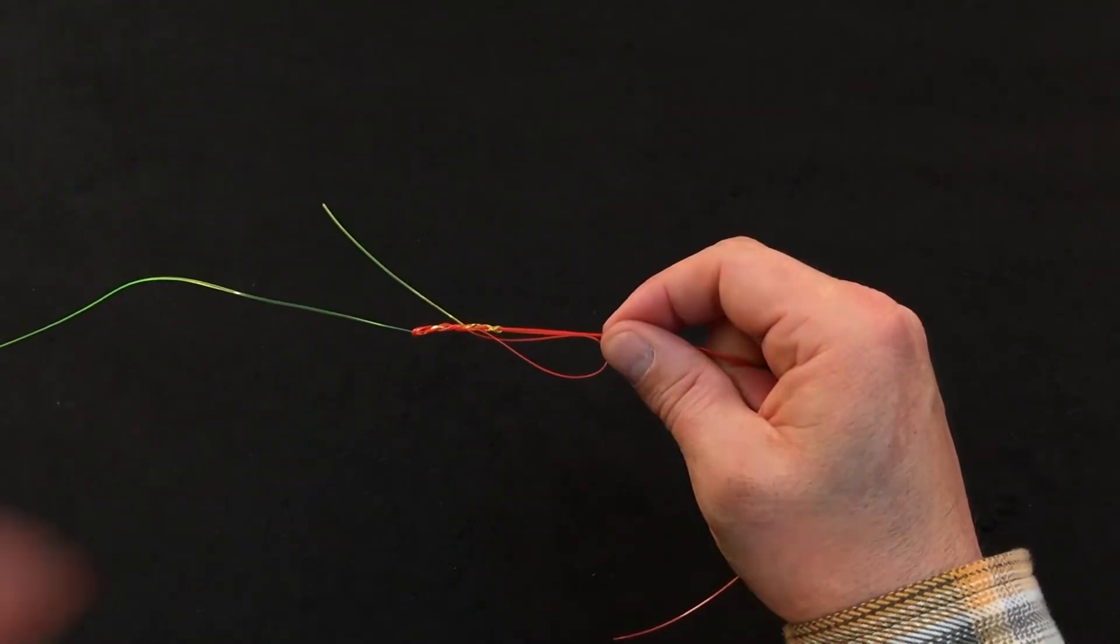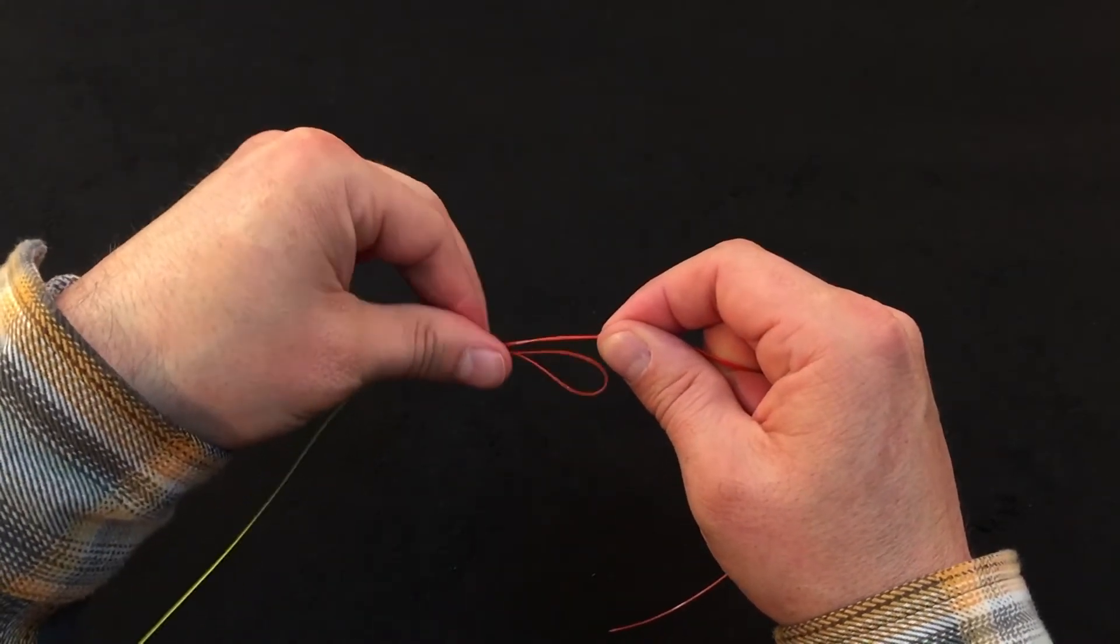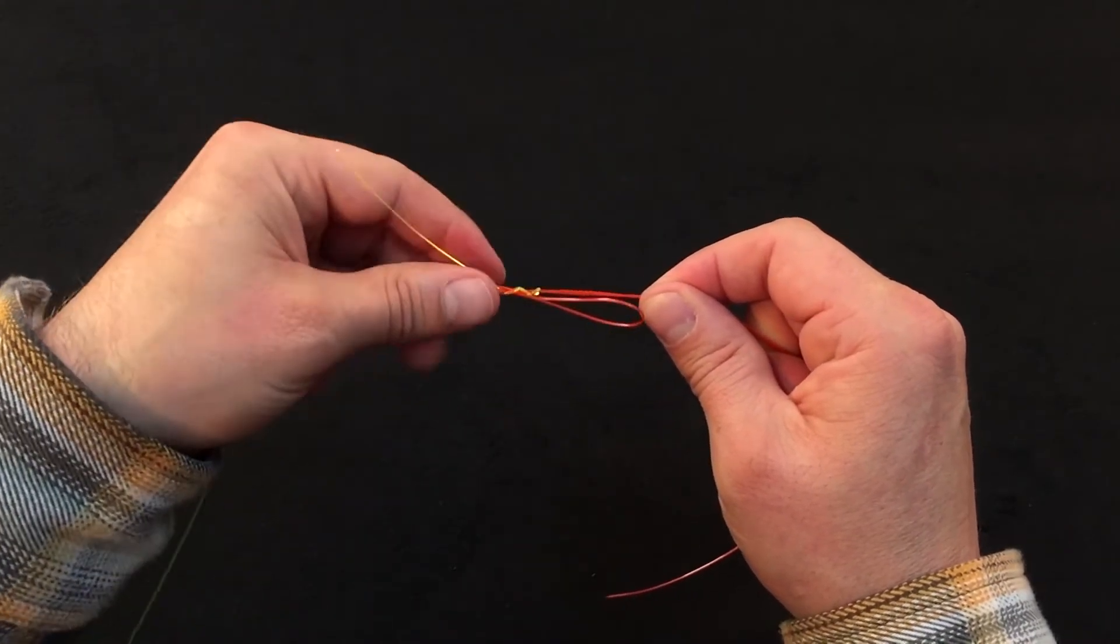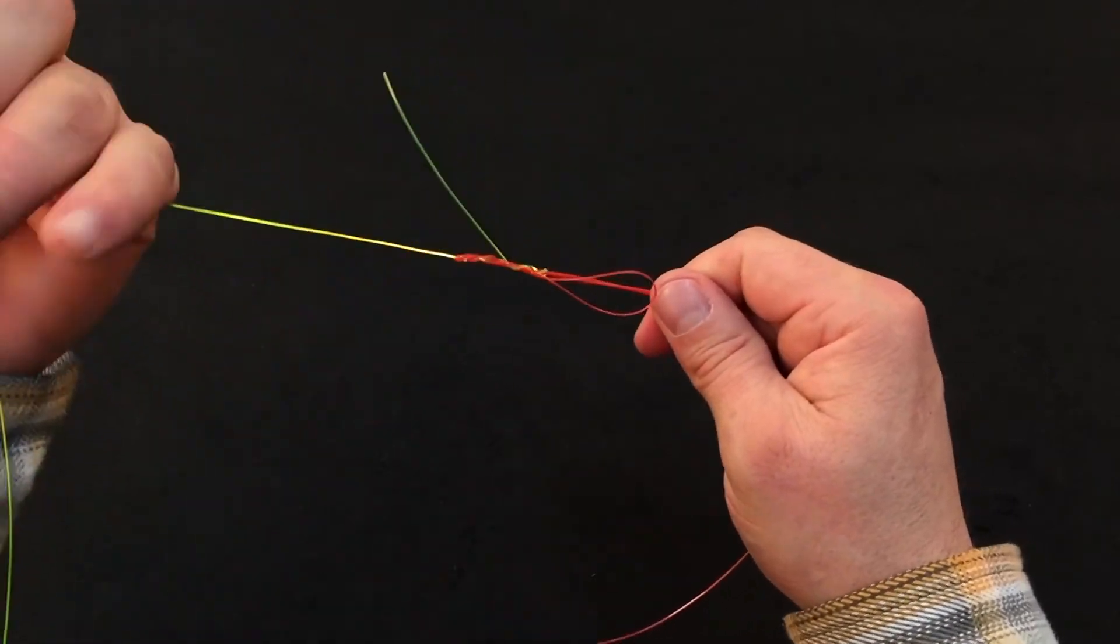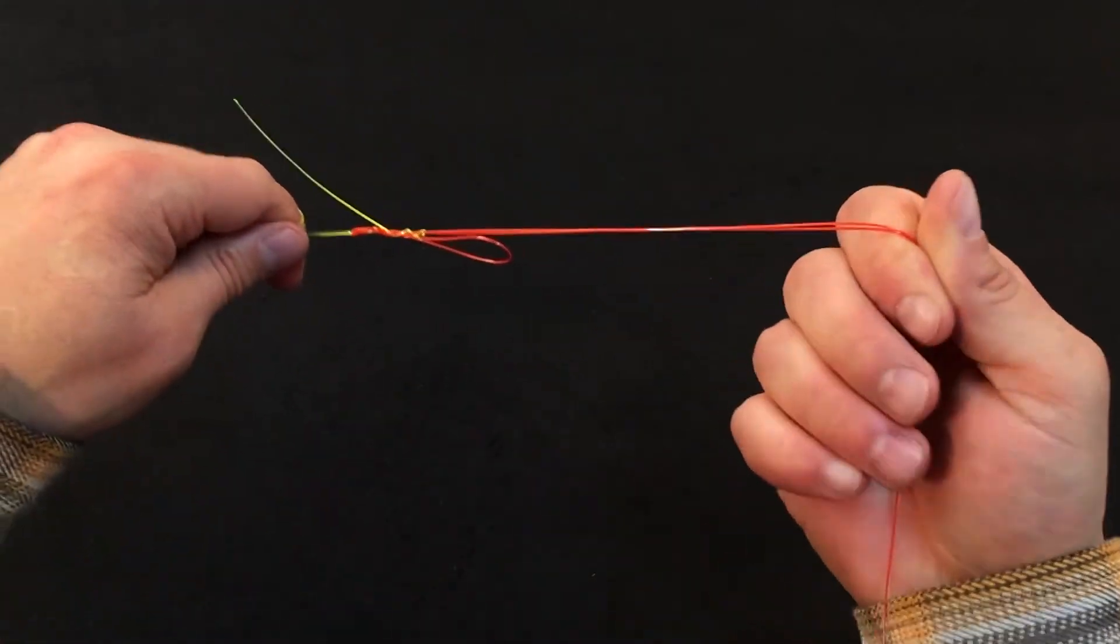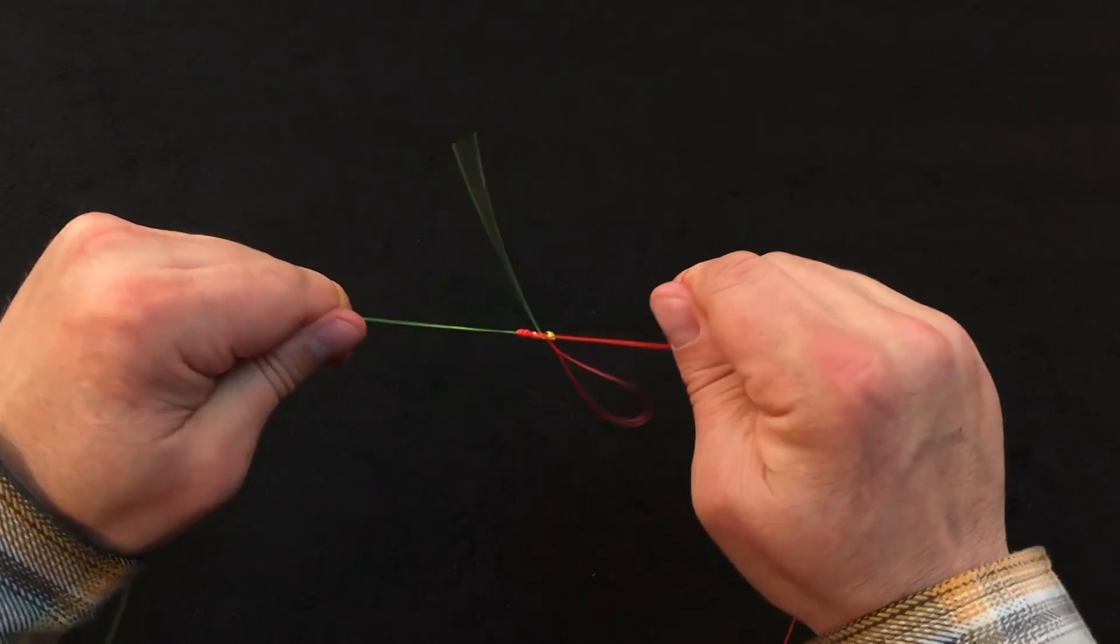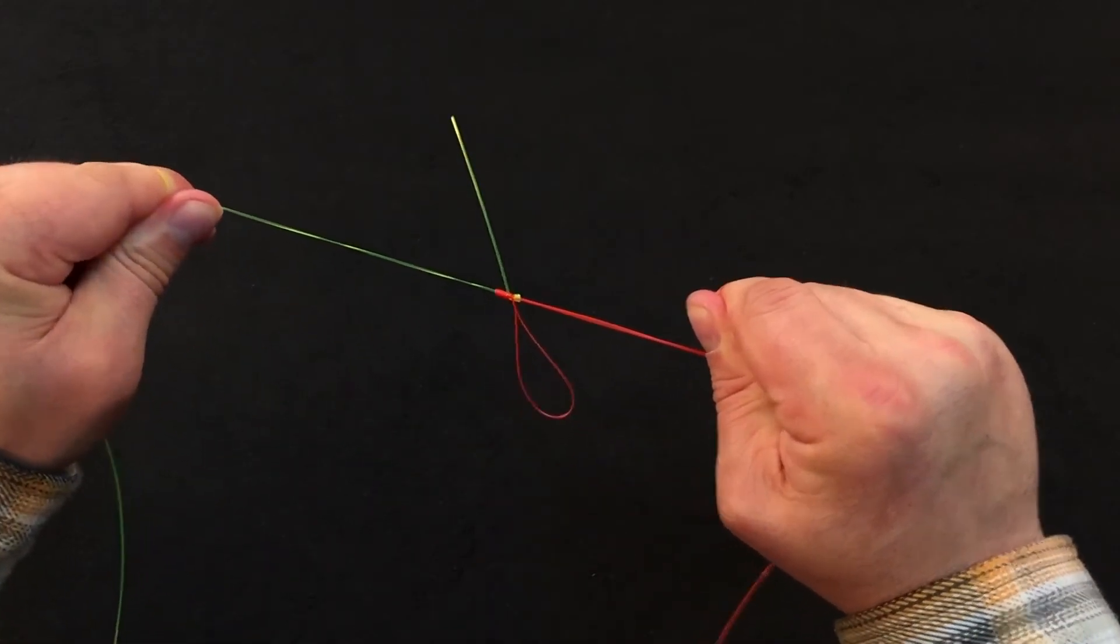A lot of moisture or lubricant when tightening this knot or seating this knot is going to be very helpful. Make sure you've got a good grip on both ends and draw that down nice and tight.